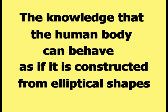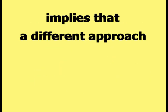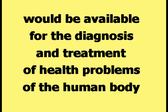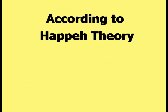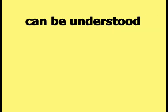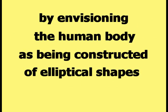The knowledge that the human body can behave as if it is constructed from elliptical shapes implies that a different approach — taking into account the elliptical nature of the human body — would be available for the diagnosis and treatment of health problems. According to happy theory, various health problems that conventional medicine has trouble understanding, diagnosing, and treating can be understood, diagnosed, and treated by envisioning the human body as being constructed of elliptical shapes.